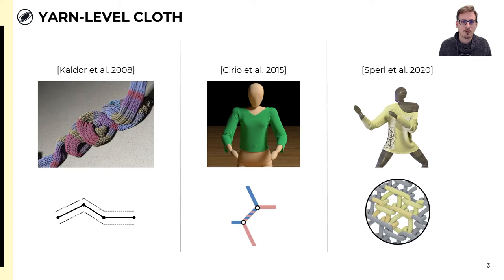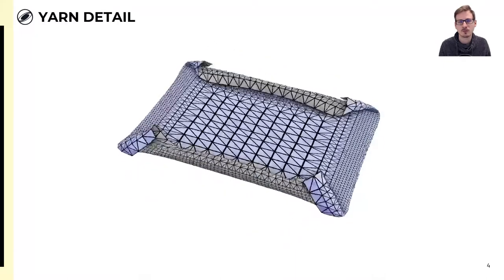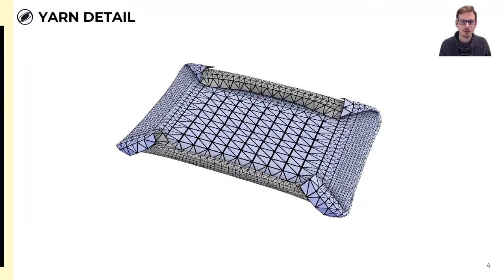So in our previous paper, we pre-computed how yarn patterns behave on a coarse scale into continuum models. These models can be used in mesh-based simulation to reproduce the large-scale stretching and bending behavior of yarn-level cloth. Doing so circumvents yarn-level discretization and benefits from the efficiency of mesh-based simulation, making it orders of magnitude faster for large garments. But while we were able to reproduce key mechanical behavior of the cloth, we lose beautiful yarn-level detail. We would like to combine these two things: the efficiency of mesh-based simulation and the detail of yarn-level geometry.